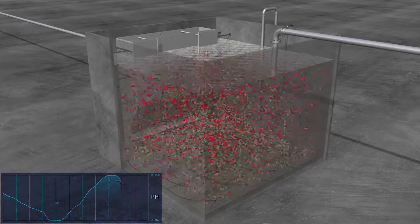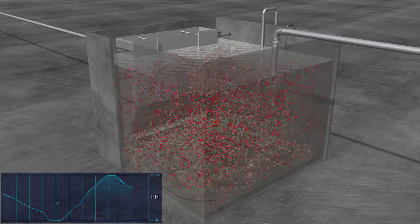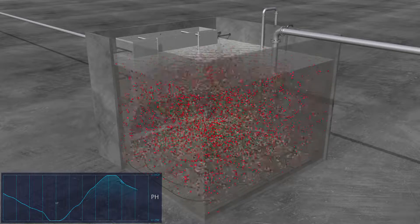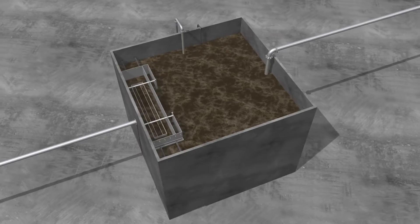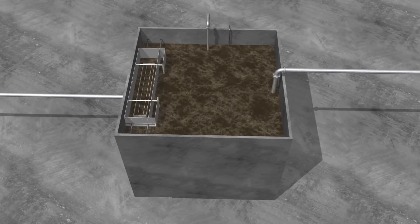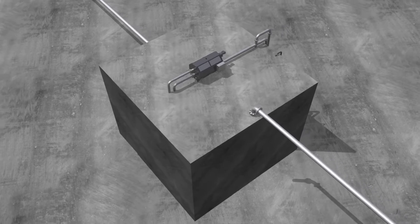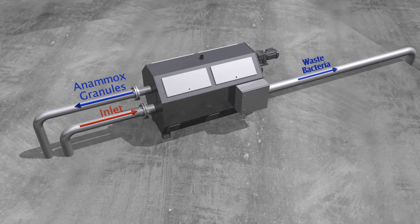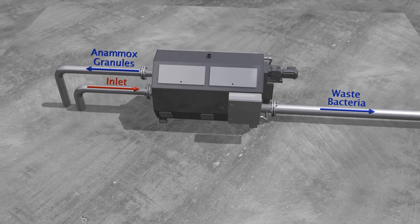The Animox granular bacteria are a slow-growing bacteria. Due to this, care must be taken to keep them inside the reactor. This is accomplished in two ways. First, when wasting is required by the process, the reactor contents are pumped to a micro screen which will separate the Animox granules from the other bulk suspended growth bacteria. The larger Animox